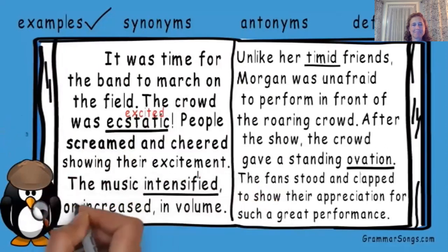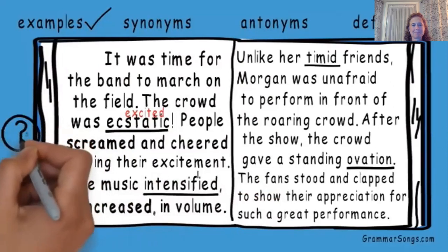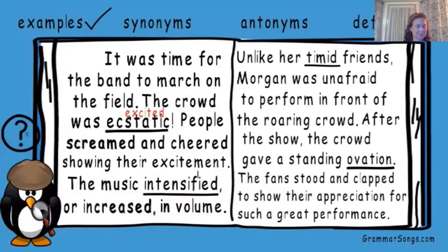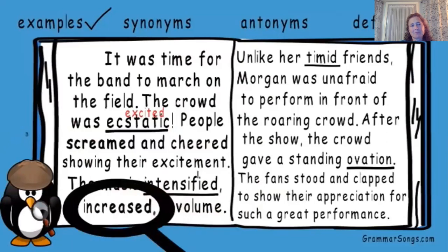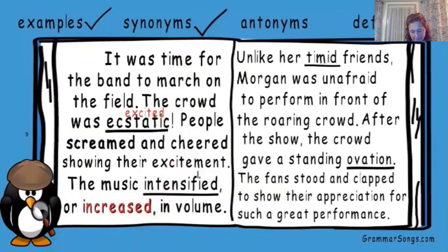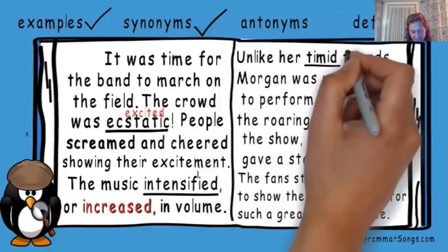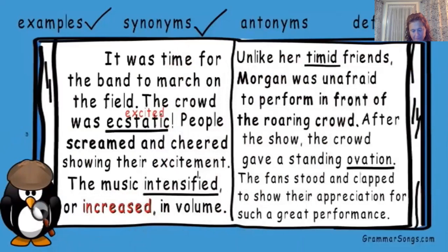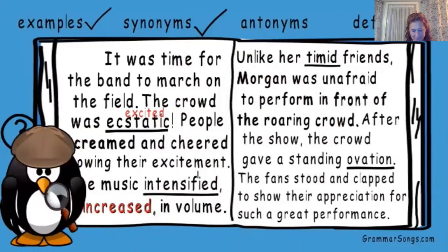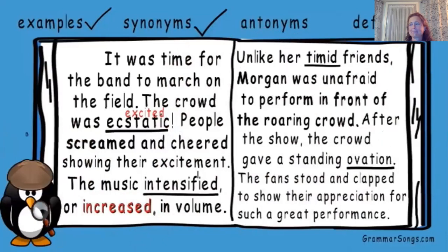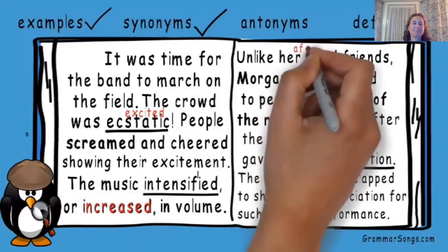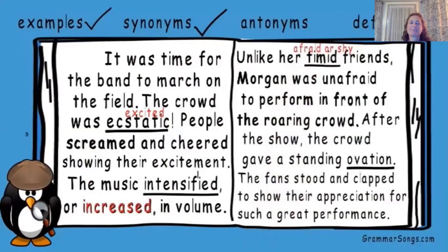The music intensified, or increased, in volume. Increased is a synonym for intensified. Unlike her timid friends, Morgan was unafraid to perform in front of the roaring crowd. Unlike means opposite — Morgan was unafraid. So if Morgan's friends are the opposite of Morgan, then her friends are afraid. Timid means afraid or shy. The author used an antonym as a clue to help us.